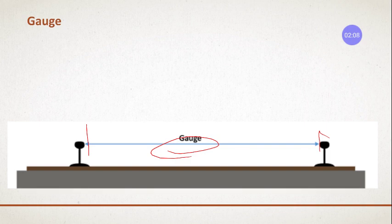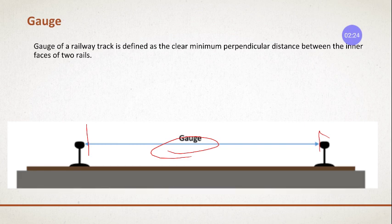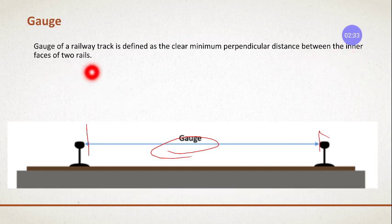So, gauge is nothing but the inner surface to inner surface distance of the two rails. The gauge of a railway track is defined as the clear minimum perpendicular distance between the two inner faces of the two rails. This is what gauge is.